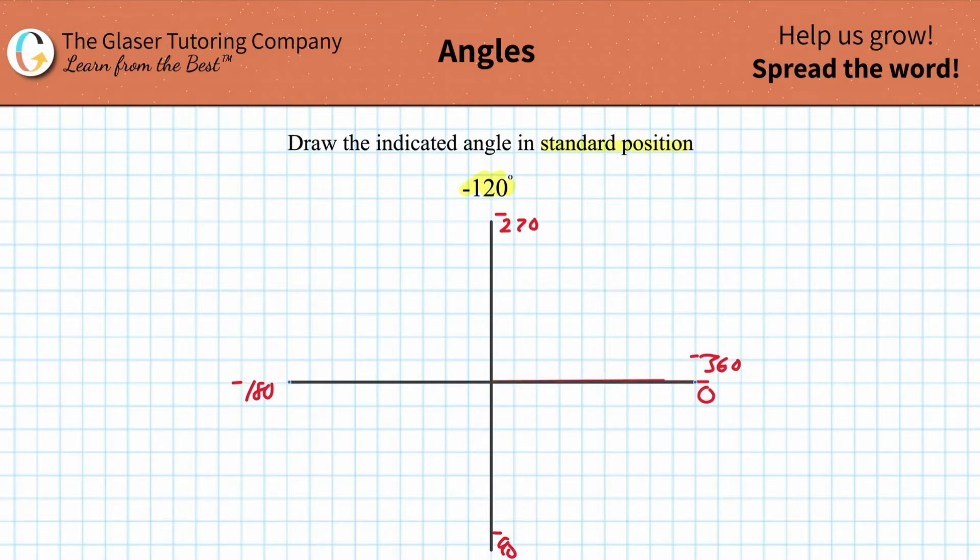What you're going to do is basically start with another little line here at the positive x-axis, and you've got to rotate this down negative 120 degrees. And boom, maybe it should stop somewhere around there. So this angle in here represents negative 120 degrees.